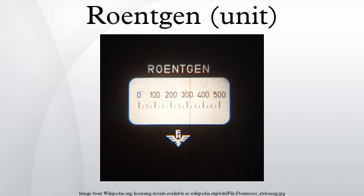It was last defined by the U.S. National Institute of Standards and Technology in 1998 as 2.58 × 10⁻⁴ coulombs per kilogram, with a recommendation that the definition be given in every document where the Röntgen is used. One Röntgen of air Kerma deposits 0.00877 grays of absorbed dose in dry air, or 0.0096 grays in soft tissue.